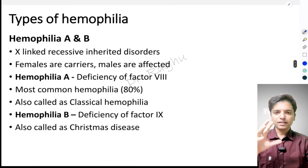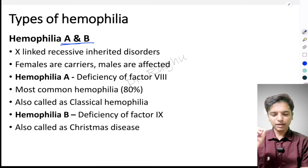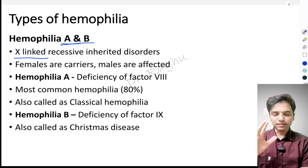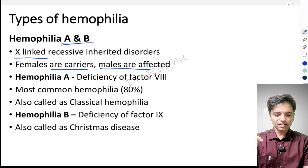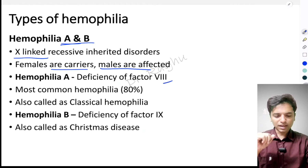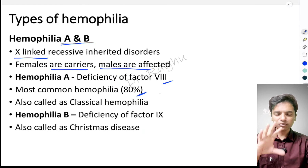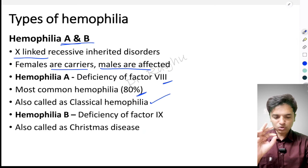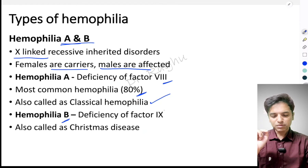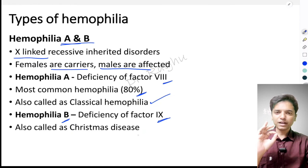The two important types are hemophilia A and B, both of which are X-linked recessive inherited disorders — females are carriers and males are affected. Hemophilia A occurs due to deficiency of factor 8 and is the most common, accounting for 80% of all hemophilia cases. It is also called classical hemophilia. Hemophilia B occurs due to deficiency of factor 9 and is also called Christmas disease.